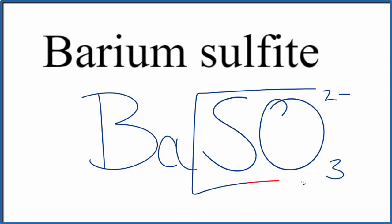We know the whole sulfite ion here is 2-. Barium, that's in group 2 on the periodic table. It has an ionic charge of 2+.